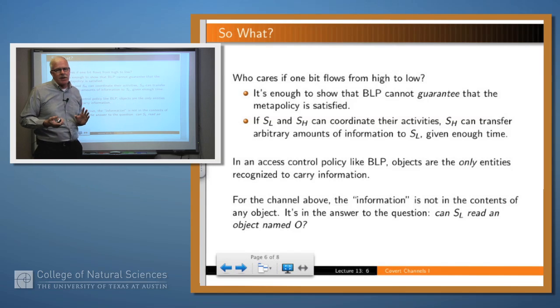The other thing to notice is that they only sent one bit of information, but remember that destroy at the bottom. Because in both cases, the object was destroyed, they could easily go back and do this again, using the same name. And if they put it in a loop, they could send arbitrary amounts of information over this channel, given enough time.